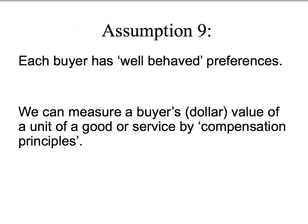Assumption nine follows from our assumption that buyers have well-behaved preferences: we can measure a buyer's dollar value of a unit of a good or service by compensation principles. Say you chose the banana and I was about to give it to you — I drop it, squish it, and say I haven't got another one. I want to make you as well-off as if you had received the banana — how much money do I need to give you? You say two dollars would make you indifferent between the banana and the money. That two dollars is the compensation amount — it exactly compensates you. That's what we mean by a compensation principle.